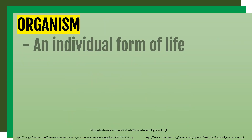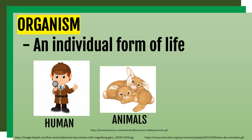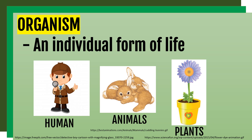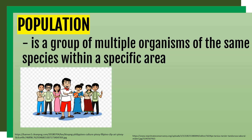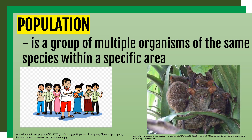Organism means an individual form of life. It can be a bacteria, human, animals, and plants. Next, a group of multiple organisms of the same species within a specific area is what we call population. For example, Filipinos in the Philippines, and the tarsiers found in Bohol.